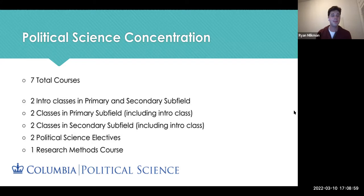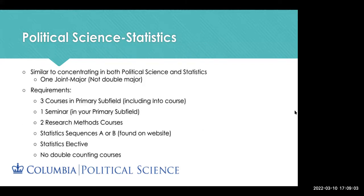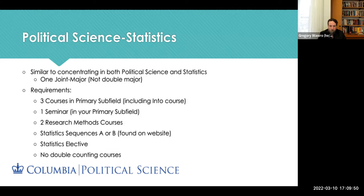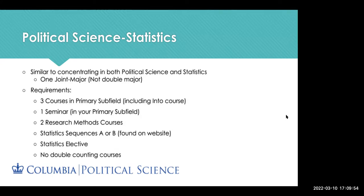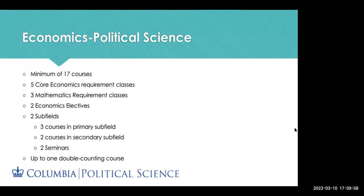I'm Tomas, also a junior. In addition to the Political Science major and concentration, we have joint majors. The first is a joint major of Political Science and Statistics — it's similar to concentrating in both, not a double major, just one combined track. Requirements include three courses in the primary subfield, a seminar, two research methods courses, and for the statistics side a statistics sequence A or B plus a statistics elective. There is no double counting in this track.